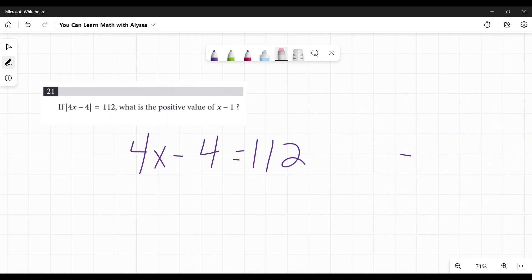So the only thing that matters is 4x minus 4 equals 112, which also means that this absolute value is just there to mess with you because this is what they're wanting you to solve. 4x minus 4 equals 112. What is x minus 1?